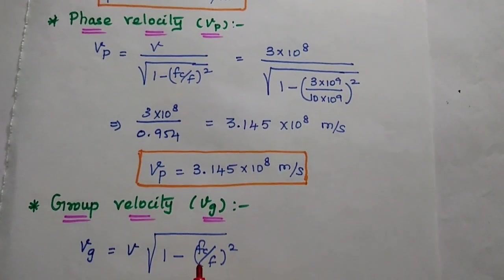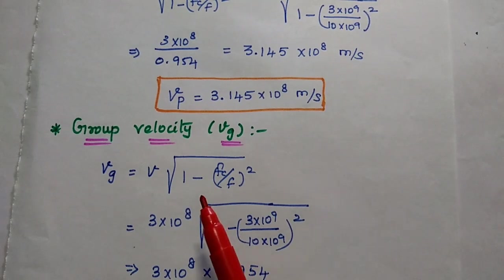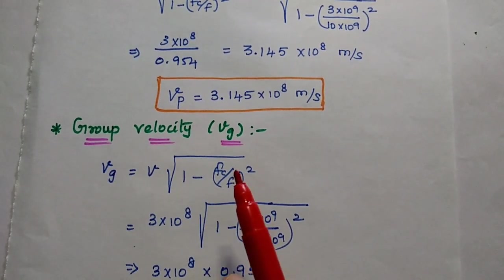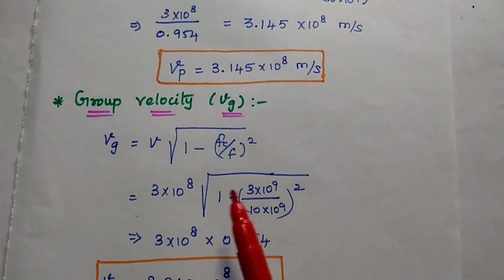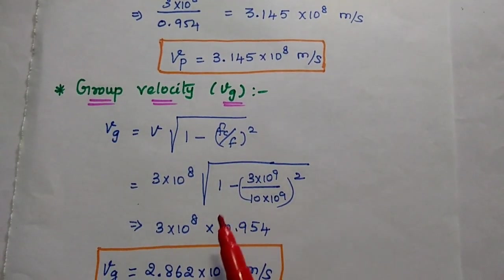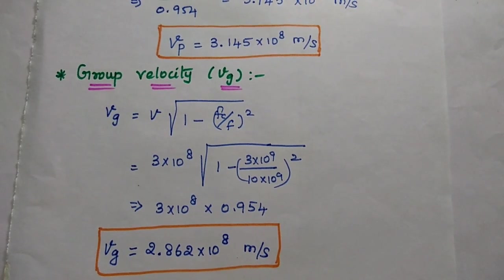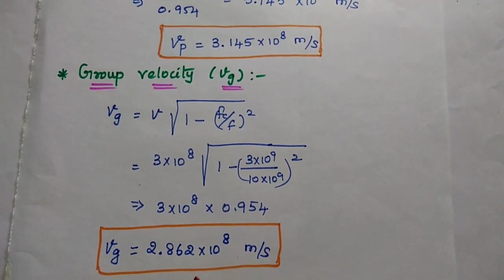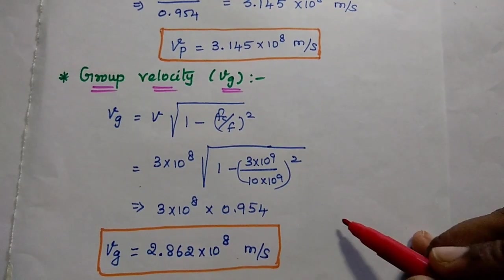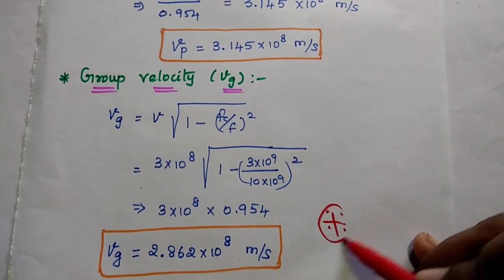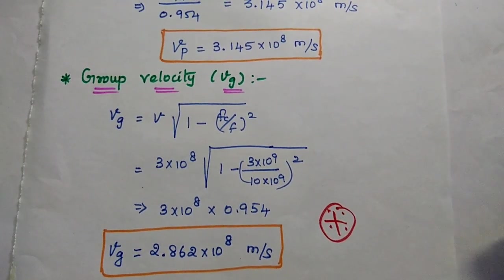Finally, the group velocity vg equals v into square root of 1 minus fc by f, the whole squared. Substituting all values, the group velocity equals 2.862 into 10 to the power 8 meter per second. This problem is very important and we can expect this problem in university examinations.